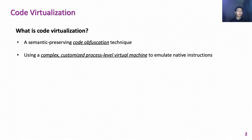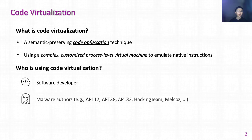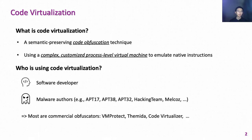In the virtualized programs, the protected area uses a complex customized process-level virtual machine to emulate native instructions. The virtualization is undisclosed, which increases the difficulty for reverse engineers to understand the virtualized instructions. Code virtualization is often used by software developers to protect their software, but it is also abused by malware authors and APT groups.